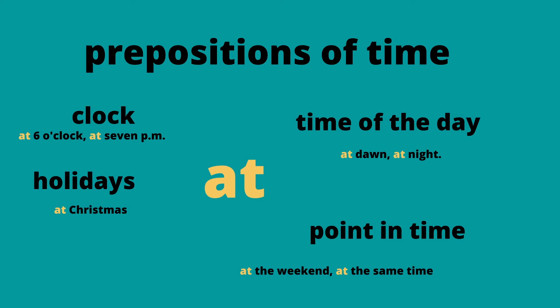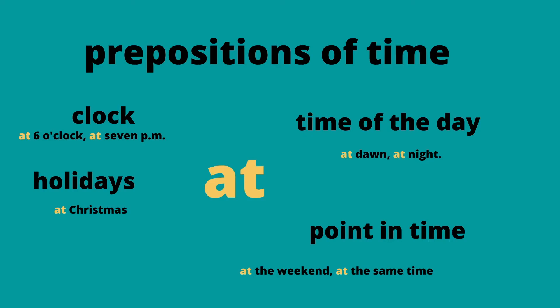Another preposition used in the context of time is 'at': for telling the clock — 'at six o'clock' or 'at 7 p.m.'; for holidays — 'at Christmas'; for other times of the day — 'at dawn' or 'at night'; and for points in time — 'at the weekend' (or 'on the weekend' in American English), 'at the same time,' and so on.